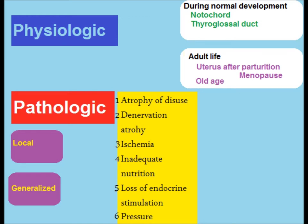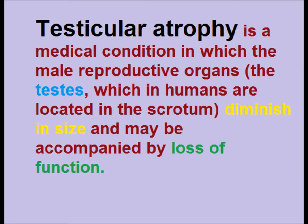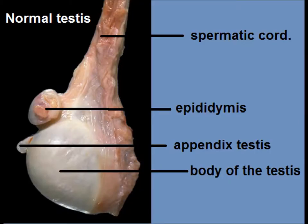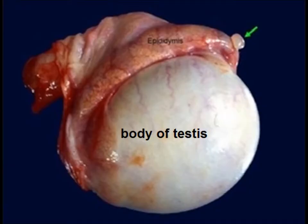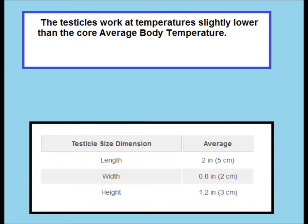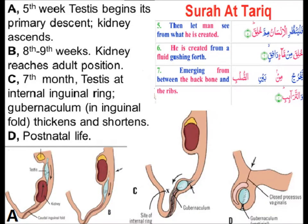There are multiple causes of atrophy. Testicular atrophy is the medical condition in which the male reproductive organs — the testes, which in humans are located in the scrotum — diminish in size and may be accompanied by loss of function. The testes are suspended in the scrotum by the spermatic cord, and we can note the length, width, and height of normal testes.